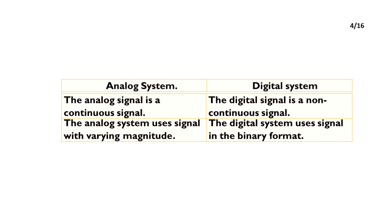Analog system and digital system. The analog signal is a continuous signal. The digital signal is a non-continuous signal. The analog system uses a signal with varying magnitude. The digital system uses a signal in the binary format.